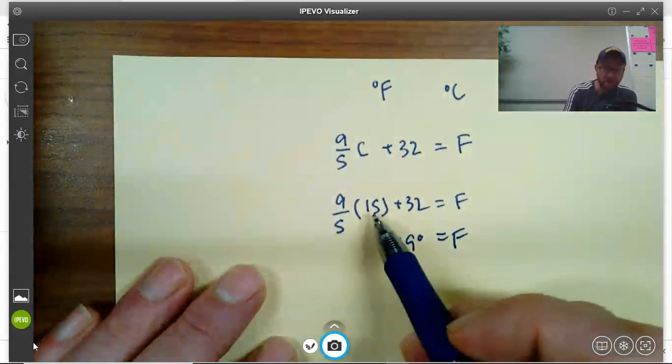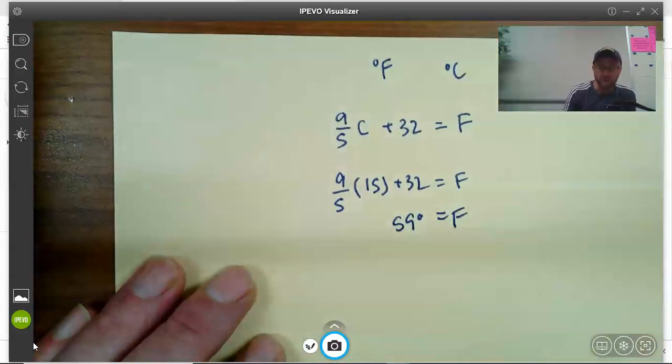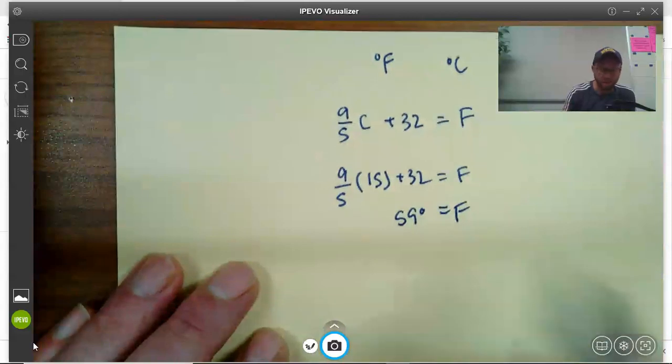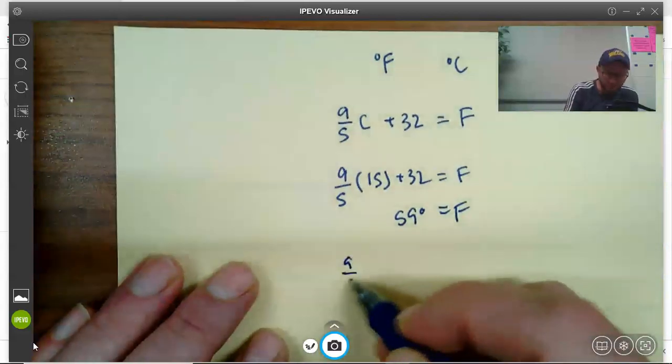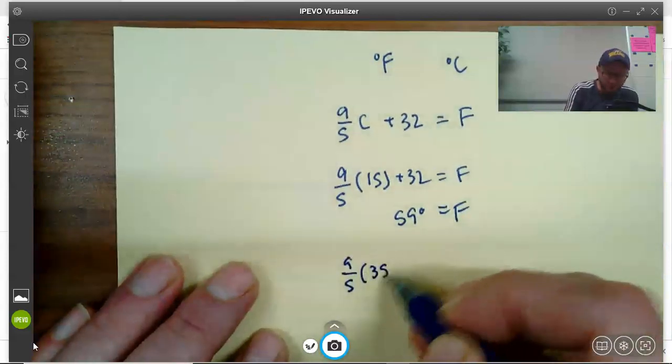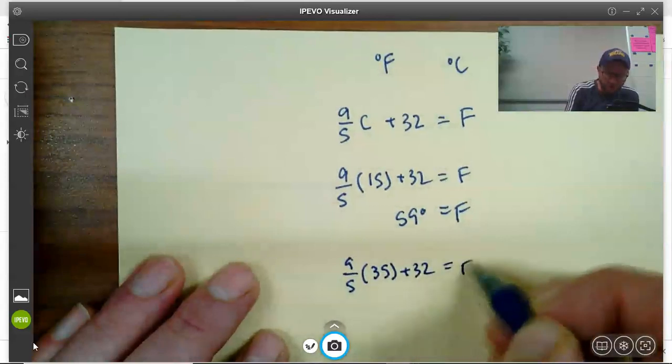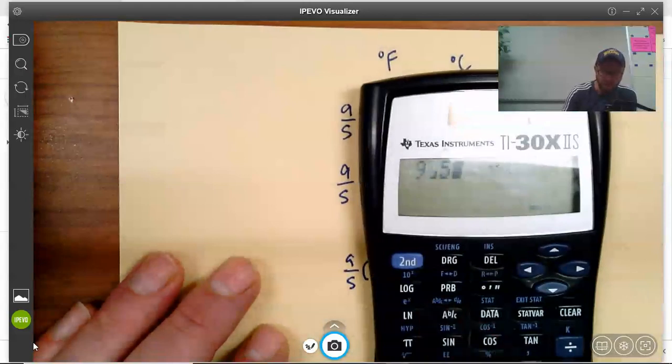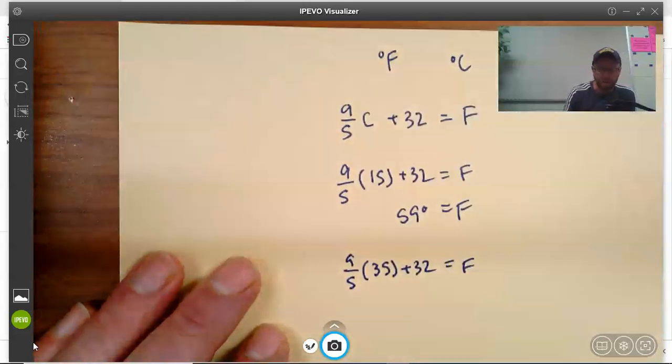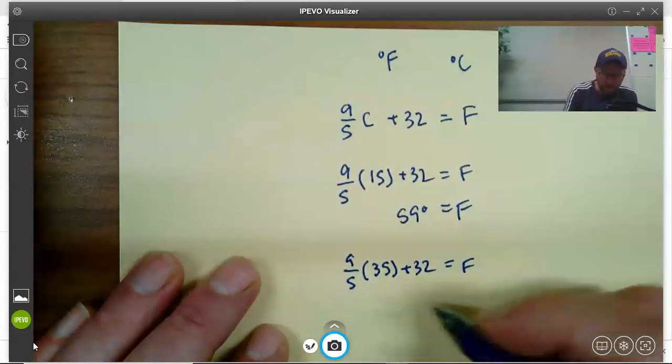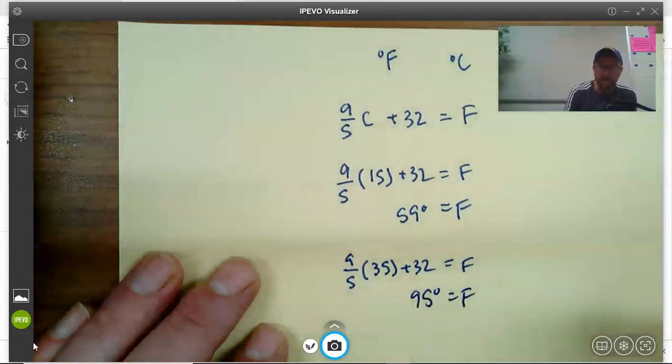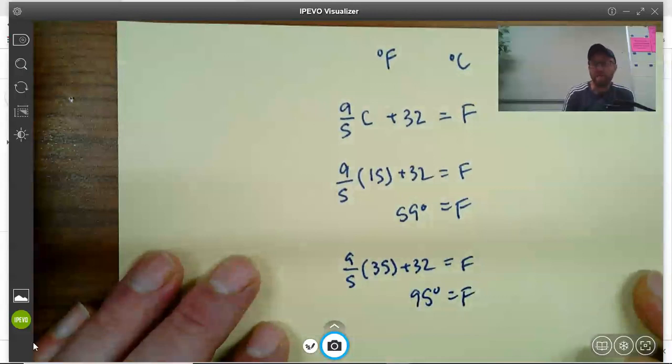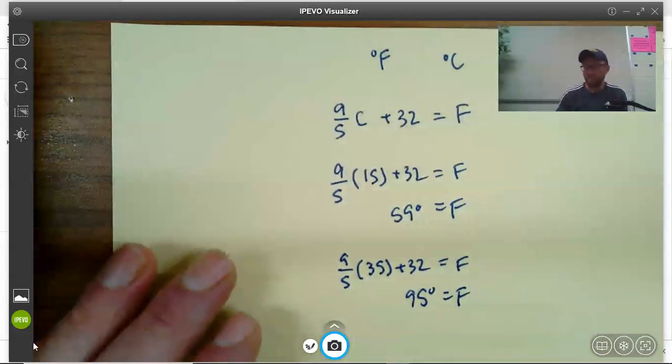If it's 15 degrees Celsius, it's 59 degrees Fahrenheit. Let's try 35. So nine-fifths times 35 plus 32: 9 divided by 5 times 35 plus 32 gives us 95 degrees Fahrenheit. So that's a pretty hot day at 95 degrees Fahrenheit.